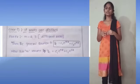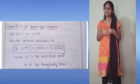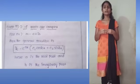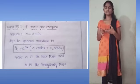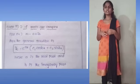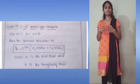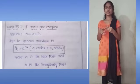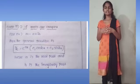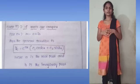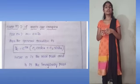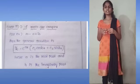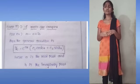Next, we move to Case 3, when the roots are complex — that is, in the form A plus iB. In this situation, the general solution is YC equals e^(AX) multiplied by (C1·cos(BX) plus C2·sin(BX)), where A is the real part and B is the imaginary part. These are the three cases in homogeneous linear differential equation with constant coefficients.